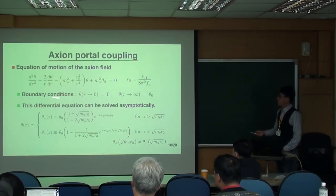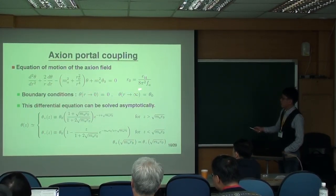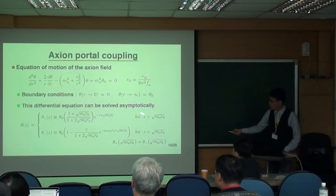The reason we impose this condition is because we want the total energy of this axion-monopole system to be finite. And again, here is the equation of motion. Actually, this equation of motion cannot be solved analytically. We can solve this numerically, like this one here. It's complicated, but you don't have to worry about this one.